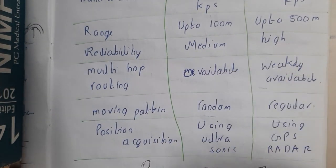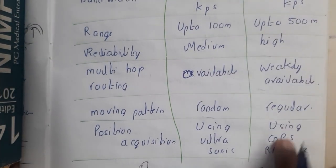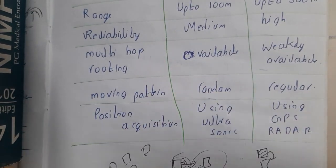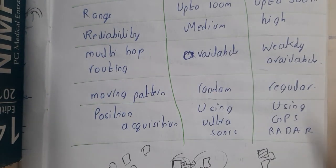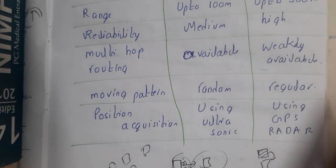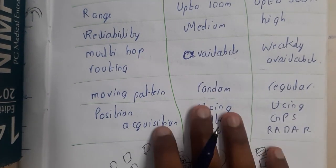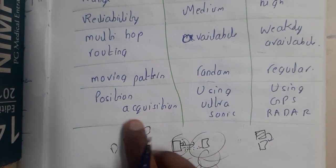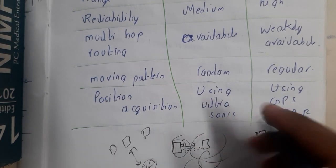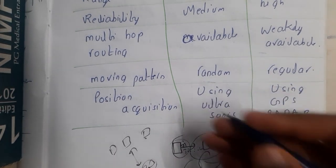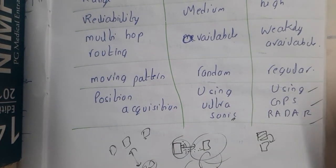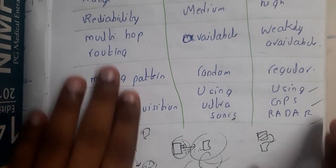In MANETs, movement is completely random — you can walk into your house or go anywhere. Whereas in VANETs, since it's a vehicle, it must travel on a road or normal surface. In MANETs, technologies like ultrasonic sensors are used, while in VANETs, GPS, radars, and similar technologies are used.